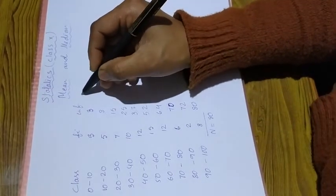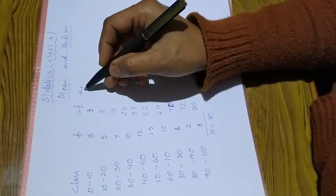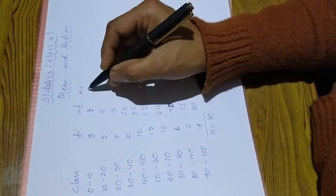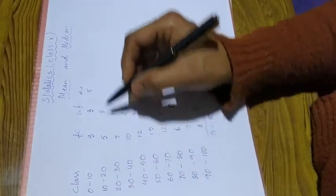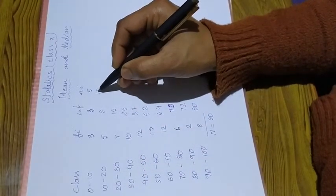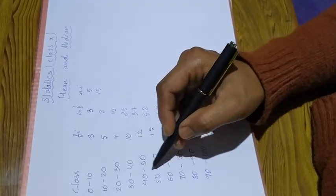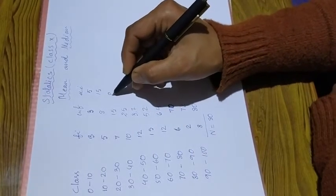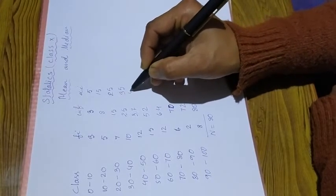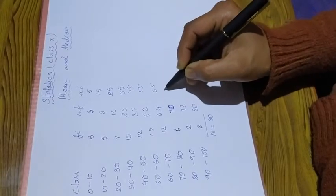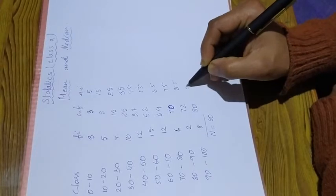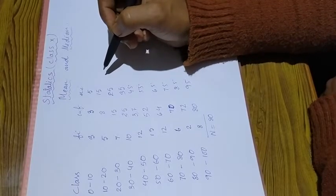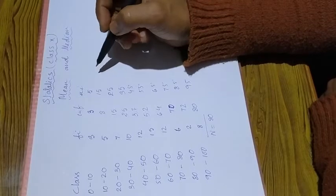The formula is xi is equal to lower limit plus h by 2. With h equal to 10, that gives 10 by 2 equals 5. So 30 by 2 equals 15, minus 8. The class marks are: 15, 25, 35, 45, 55, 65, 75, 85, 95. We get 65 and we can simplify using the step deviation method.